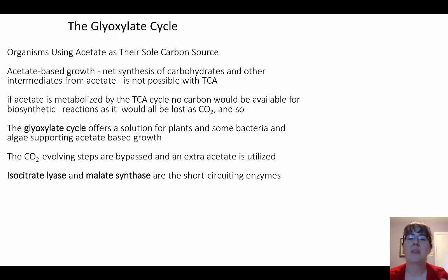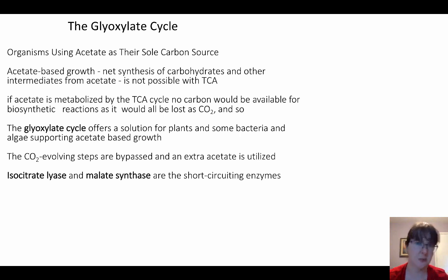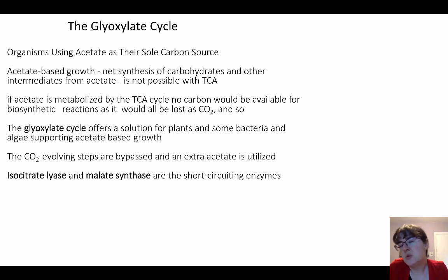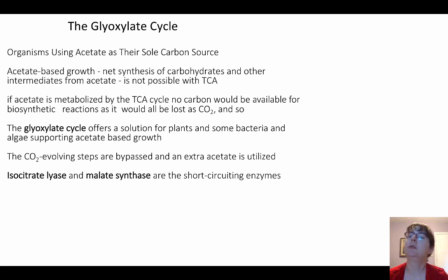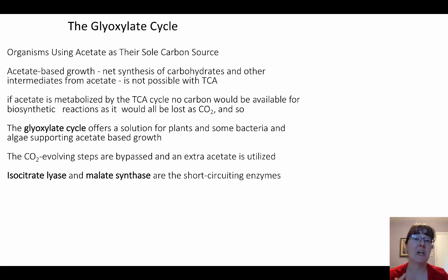When we were talking about the TCA cycle, we pointed out that there are decarboxylation reactions that happen — the TCA cycle gives carbon dioxide as a byproduct and gets rid of those carbons. There are anaplerotic reactions that can use that carbon dioxide to feed back into the TCA cycle, but if everything's running as normal, those carbons are just lost. The thing is, there are organisms that use acetate as their sole carbon source. Acetate only has two carbons in it, so these organisms are in a more stripped-down environment — they can't afford to lose any carbons. Acetate-based growth isn't possible with the standard TCA cycle.